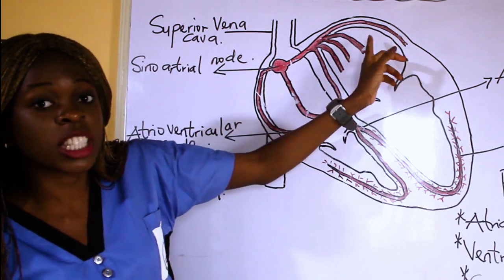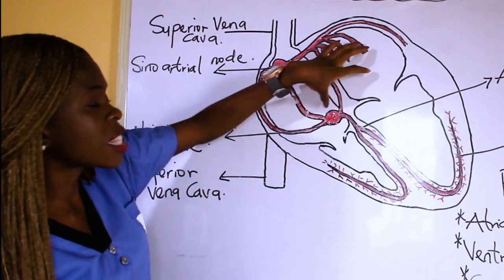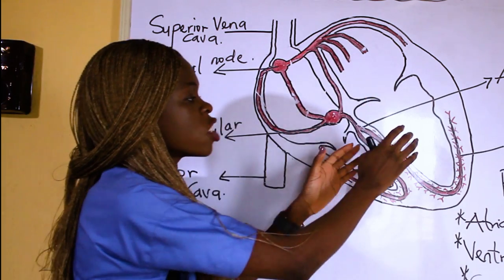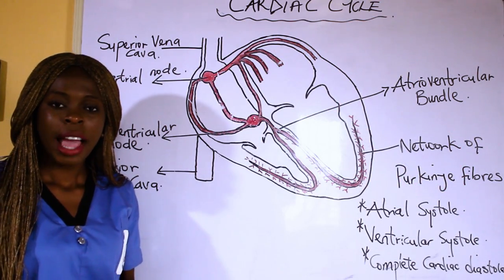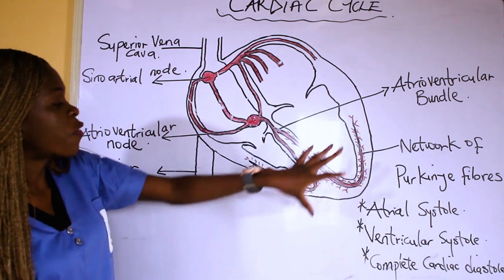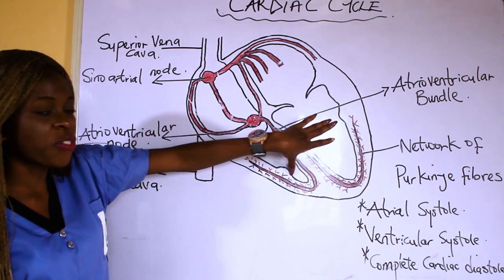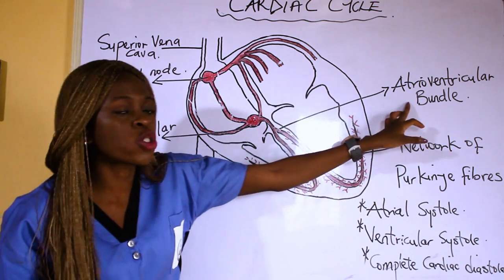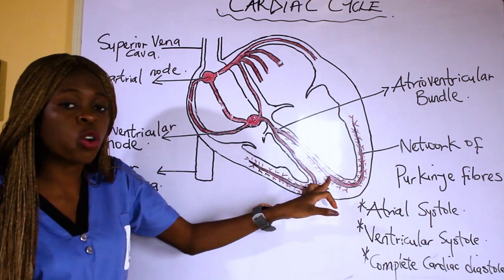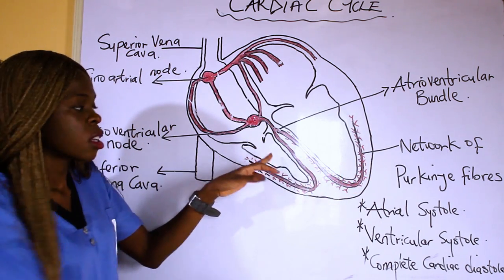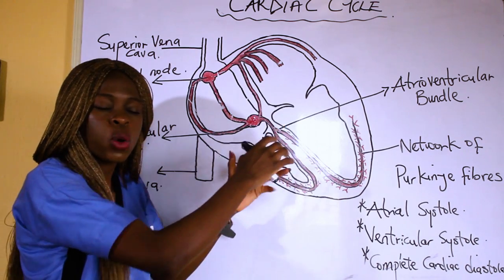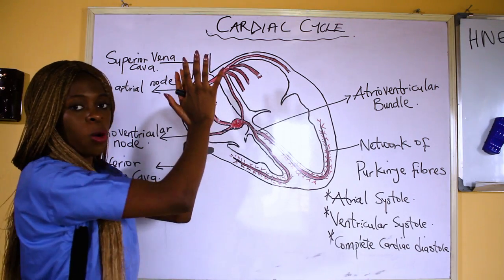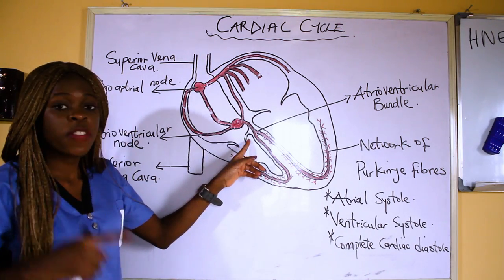With sinoatrial node contraction, impulses spread to both atria, ensuring complete emptying of the atria into the ventricles. Once the ventricles are filled, the Purkinje fibers carry impulses from the atrioventricular bundle, causing contraction of the ventricles. When the ventricles contract, they push the blood upward.